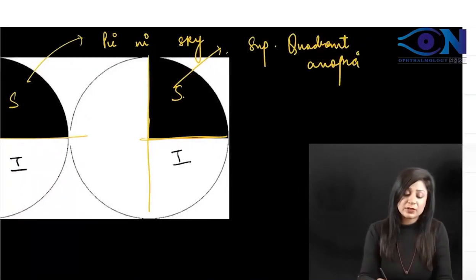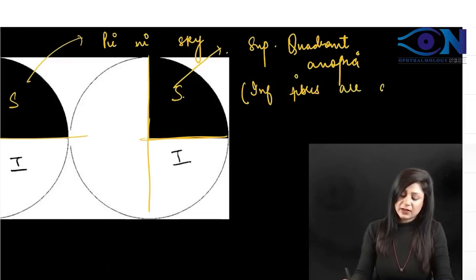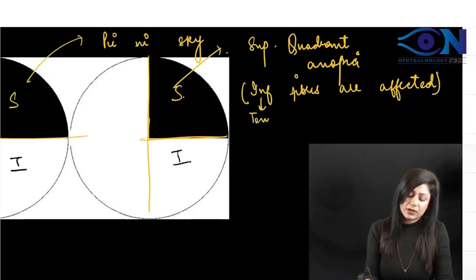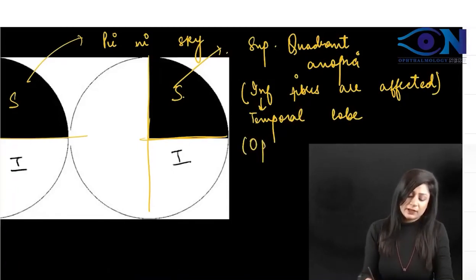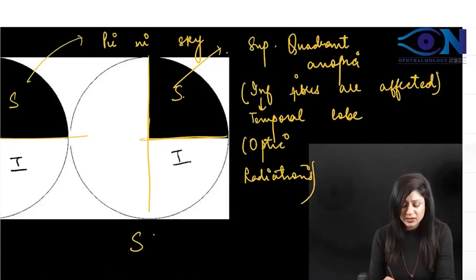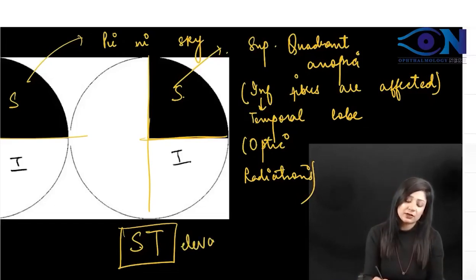Because opposite fibers are affected, inferior fibers are involved. Inferior fibers are present in the temporal lobe, so this is a lesion of the temporal lobe — specifically the optic radiation. You must remember that in the temporal lobe we get superior quadrant anopia. The mnemonic is ST elevation: S for superior quadrant anopia and T for temporal lobe.